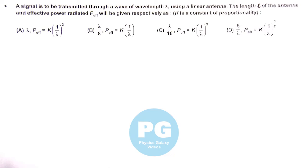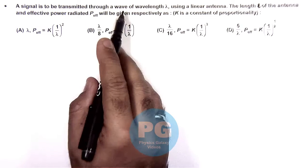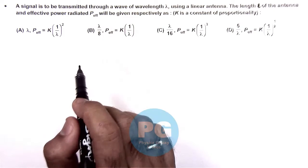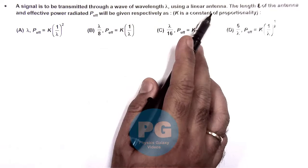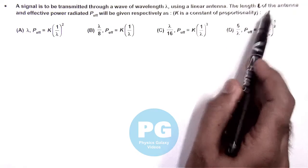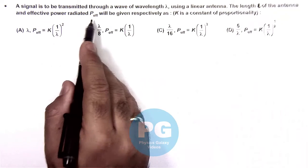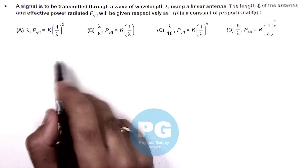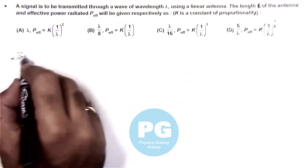In this question it says a signal is to be transmitted through a wave of wavelength lambda using a linear antenna. It is asking the length L of antenna and effective power radiated P effective will be given respectively as.